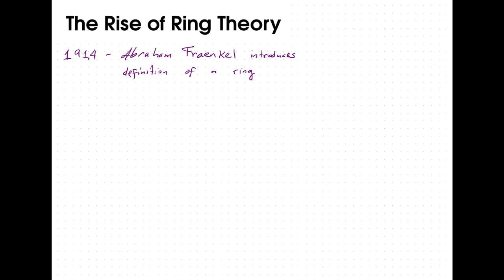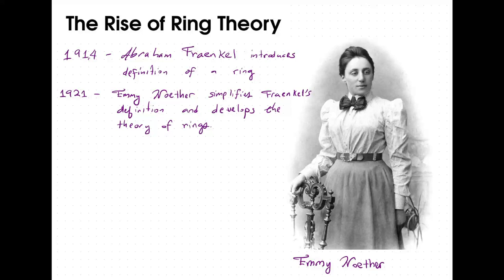Frankel's initial definition of a ring did not attract as much attention and did not lead to as many general applications as what came later — specifically with the work of Emmy Noether in 1921. Her work not only improved upon Frankel's original definition but introduced the notion of ideals, leading to the modern foundations of ring theory. A good chunk of rings is named in her honor, known as Noetherian rings, and they are one of the main objects of study in commutative algebra.